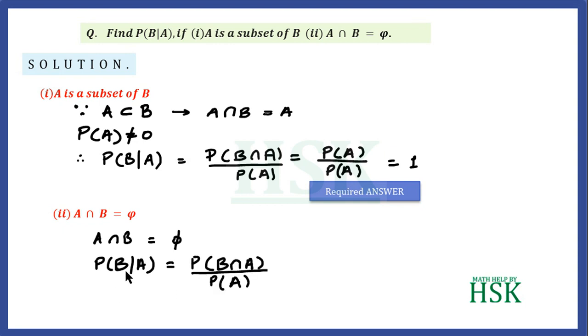So probability of B given A is equal to probability of B intersection A upon probability of A. So probability of B intersection A would be equal to 0 upon probability of A, this would be equal to 0. So this is the required answer. So this is how I am going to solve this question.